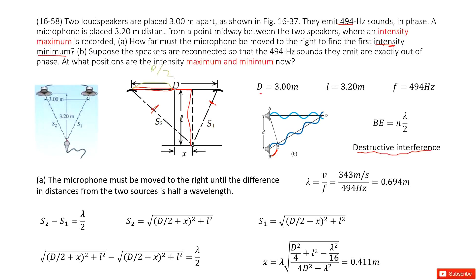So this part is called D over 2. And this length is called X. This length is called L. So you can see for S2 is D over 2 plus X squared, this side length, plus L squared then square rooted. This is called S2.